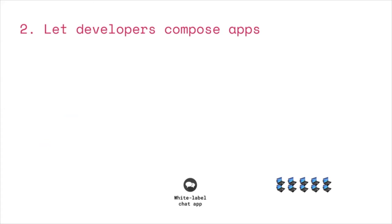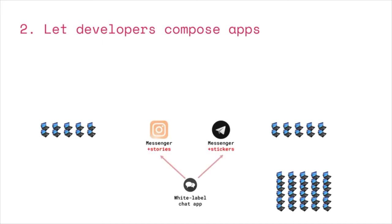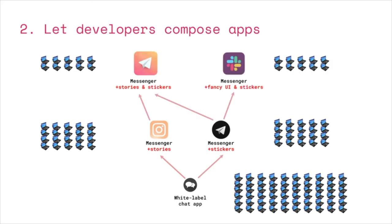Let's visualize it quickly. Imagine you have a white-label chat app with users represented by laptops. Some developers could decide to add stories to that; other developers could add stickers — each attracting new users, which benefits that base app, growing its user count. Then, because it's easily composable, others say let's add stories again, getting more users at the top. Someone adds fancy UIs or stickers, and you get a Slack-like relay. Each of these different elements adds more users and benefits the original bottom application as well as the intermediate applications.